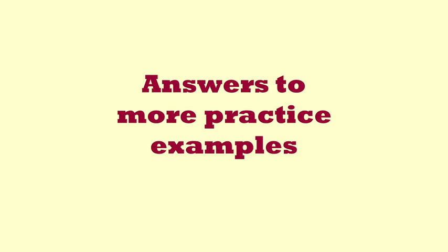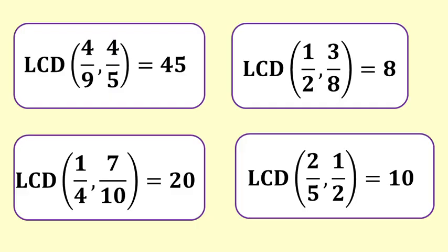Here are the answers for the additional problems. The lowest common denominator of four ninths and four fifths is forty-five. The lowest common denominator of one half and three eighths is eight. The lowest common denominator of one quarter and seven tenths is twenty, and the lowest common denominator of two fifths and one half is ten.